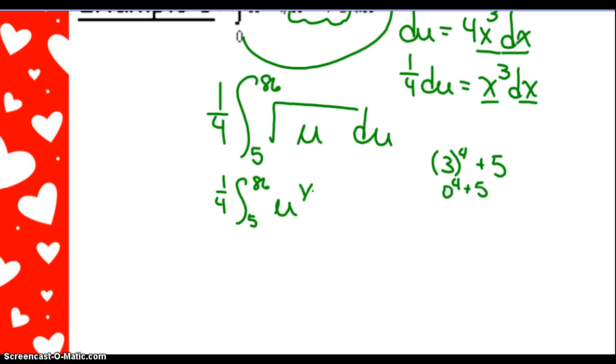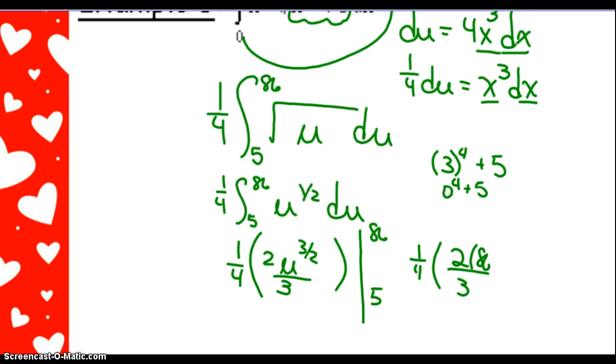So the antiderivative of that is going to be u to the 3 over 2 times 2 thirds. Remember that this is times the 1 4th in front. So now put the bar up. 86 and 5. So 1 4th times 2 over 3 times 86 to the 3 over 2 minus 2 over 3, 5 to the 3 over 2. And depending on where you are in the test, you could use the calculator to simplify that or you could leave it in that form.